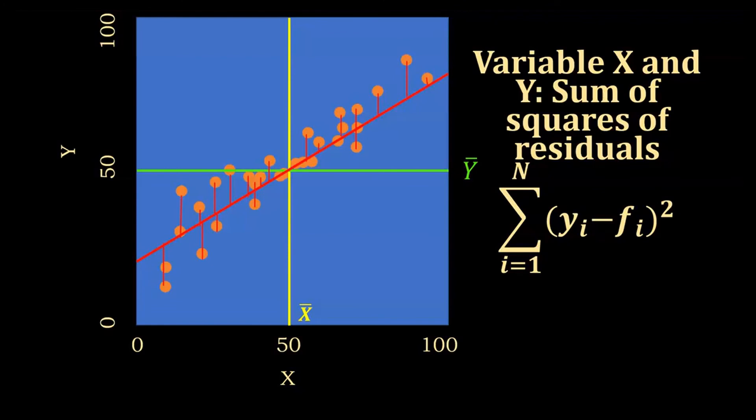So if the regression line tries to predict the values of Y, then the distance between the regression line and those values is the error of the regression, or as they are called as well, residuals.